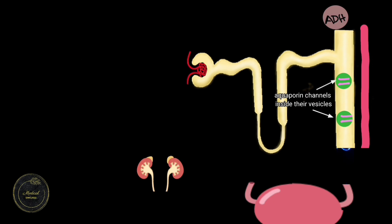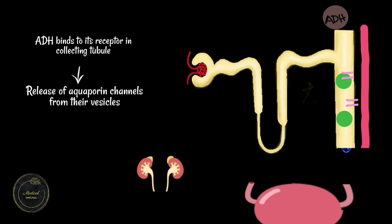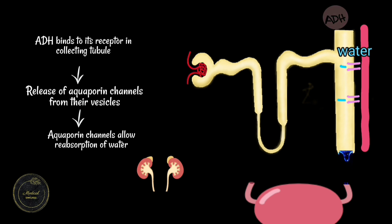When ADH binds to its receptor in the collecting tubule, it causes release of the aquaporin channels from their vesicles. The aquaporin channels go and bind to its receptor and cause free flow of water from the collecting tubule back into the blood.